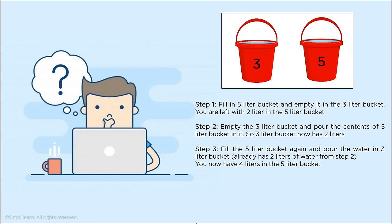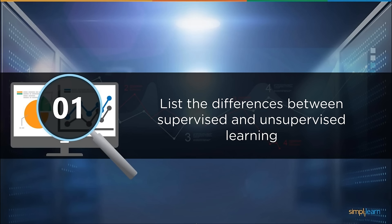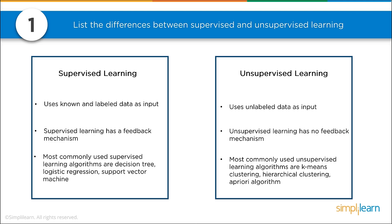Interview questions break into all kinds of patterns. We have logic like the last one, and we also have vocabulary questions. List the difference between supervised and unsupervised learning — probably one of the fundamental breakdowns in data science. Supervised learning uses known and labeled data as input and has a feedback mechanism. The most commonly used supervised learning algorithms are decision tree, logistic regression, and support vector machine. Be aware of the many different algorithms out there, outside of deep learning, as many work faster on raw data numbers.